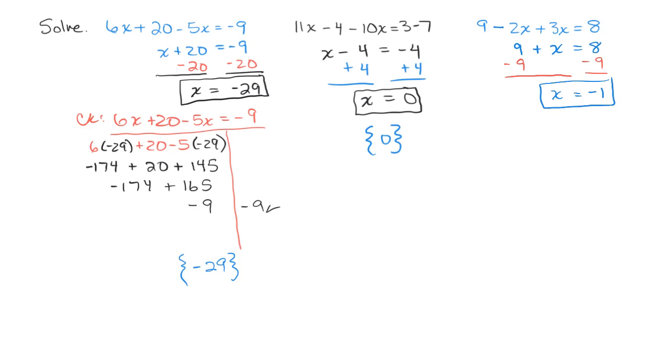And that can be checked. Let's just do that real quick. We'll check. 9 minus 2x plus 3x equals 8. Do we get the same number on both sides when we plug in negative 1? Well, I'm going to plug in negative 1 for x here, and negative 1 for x here. And that gives me 9 plus 2 minus 3, which is 11 minus 3, or 8, and so it checks. So that means negative 1 is indeed the solution, and formally we could write that in braces.